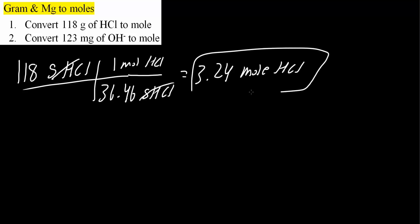Now we will do the second problem. Same exact idea, but one more step. 123 milligrams of OH-. We know that 1000 milligrams is equal to 1 gram. So this would be grams of OH-.